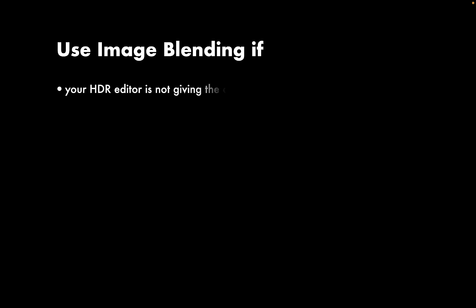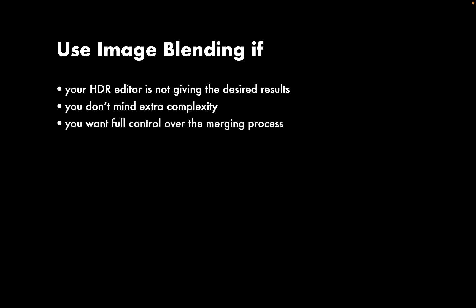On the other hand, use image blending if your HDR editor is not giving the desired results, you don't mind the extra complexity like having to manually align images, create layers, paint on a mask, and so on. Use it if you want full control over the blending or merging process — including which tones are affected and how much each tone is affected — and if you want a more natural looking image. Since image blending is more of a manual rather than automated process, there's less chance for it to adjust tone and color excessively as HDR can.